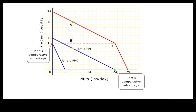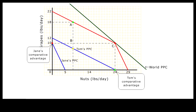If they decide to produce at point A, only Jane is specializing according to her comparative advantage. But if Tom and Jane trade with the outside world along the world PPC — which has a more favorable trading ratio between grapes and nuts — then both Tom and Jane can completely specialize by moving from point A to point C. At point C, both Tom and Jane completely specialize. If Tom and Jane move from point C to point E by trading nuts for grapes, they are better off than at point A with more nuts.